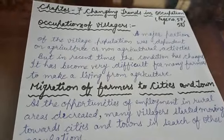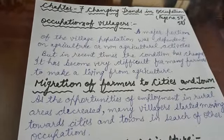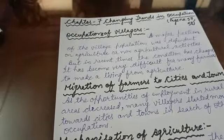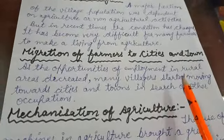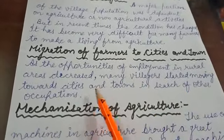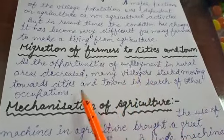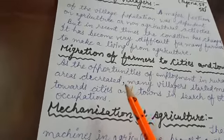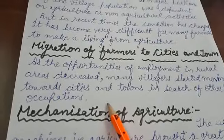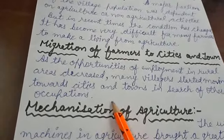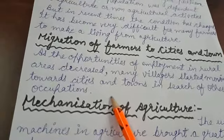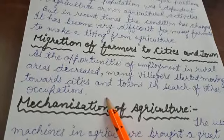The opportunities for earning from non-agricultural activities have also decreased. Migration of farmers to cities and towns: as the opportunity of employment in rural areas decreases, many villagers start moving towards cities and towns in search of other occupations. Most of them lack the skill and training for taking up jobs in factories, offices, etc. Hence, they had to work as laborers on construction sites, in dhabas, or as rickshaw pullers. Sadly, some of them even had to resort to begging.